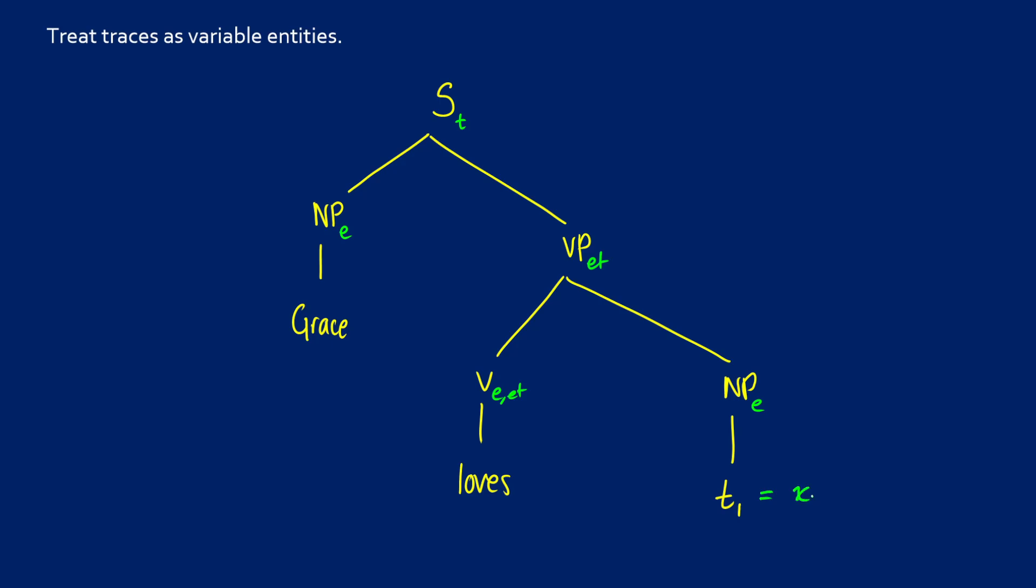And for its meaning, we're just going to give it a variable like X, and then we're going to give it the same subscript. So if we have trace one, we're going to call it X1. If we have trace K, we're going to call it XK.